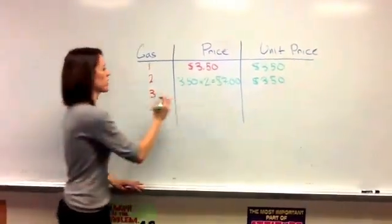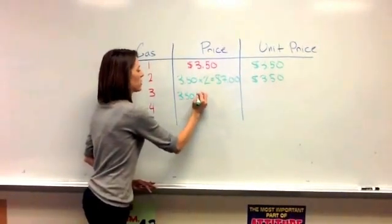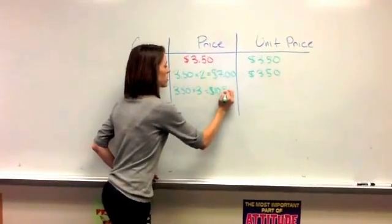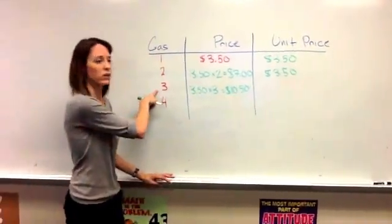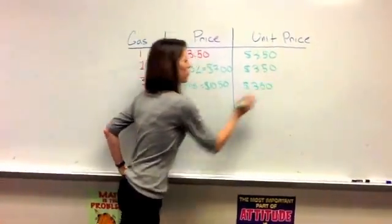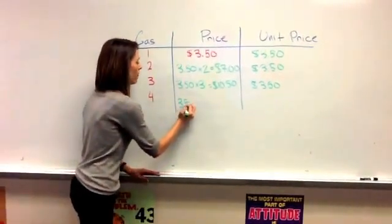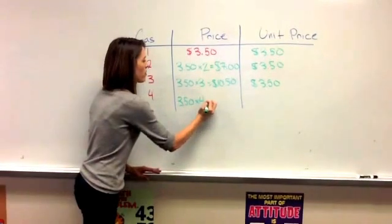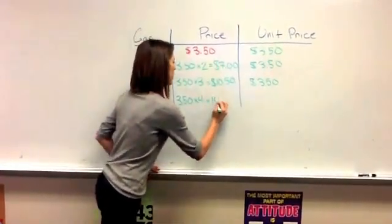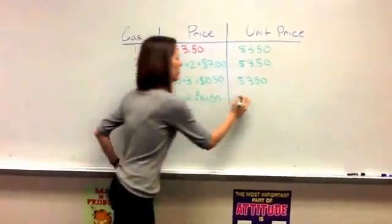Okay? So now you're talking about three gallons of gas. Same thing. You're going to take one gallon of gas times three equals $10.50 for three gallons of gas. So your unit rate, again, is still $3.50. Okay? Same thing with number four. $3.50 for one gallon. So for four, it would be $14. And the unit price is still $3.50.